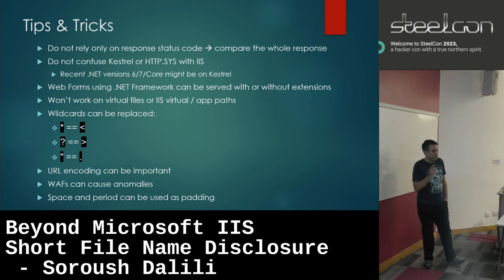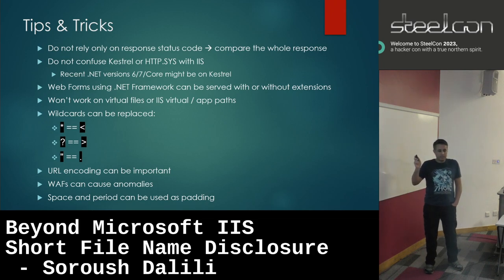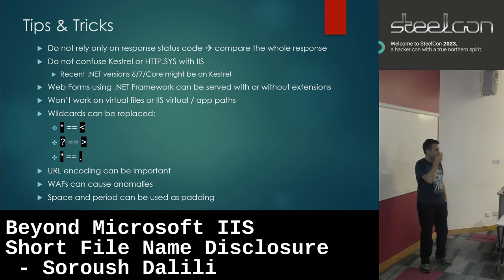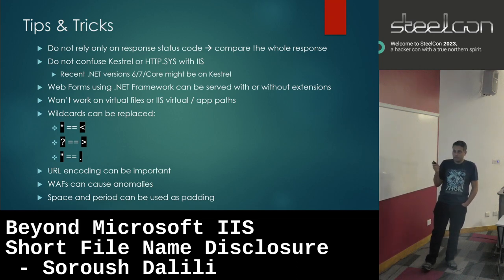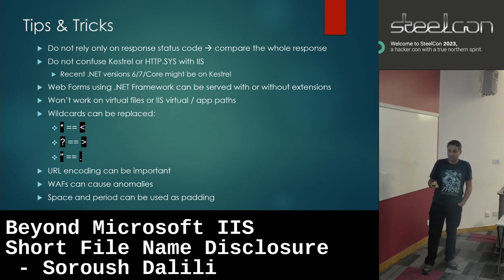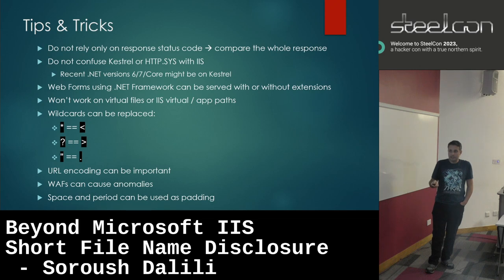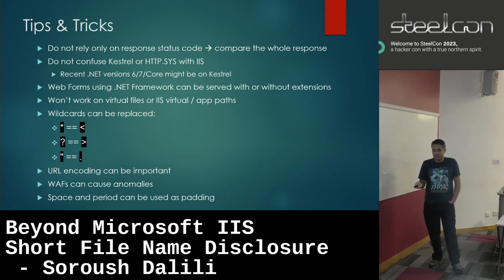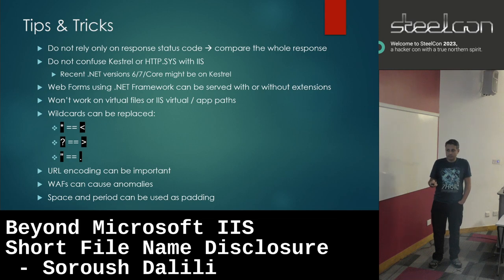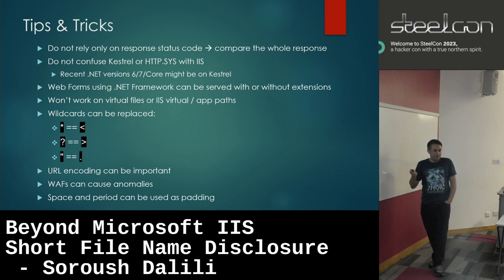This method won't find virtual files or applications — only physical files on the file system. Also, when asterisk and question mark are blocked, you can use angle brackets. They are automatically converted to asterisk and question mark when querying the file system. The double colon can act as a dot character. If a WAF blocks something like admin~1.asp, you can replace the dot with a double colon — just remember to URL-encode them twice. You can also have space and period characters after the file name — they will be ignored.